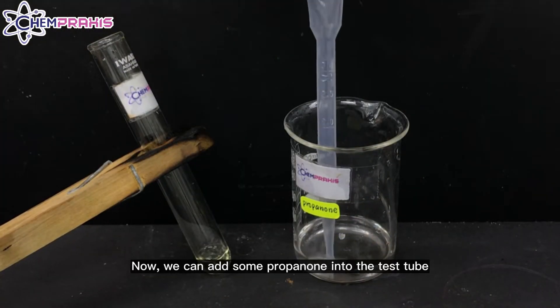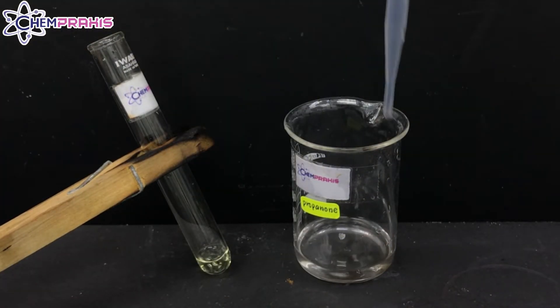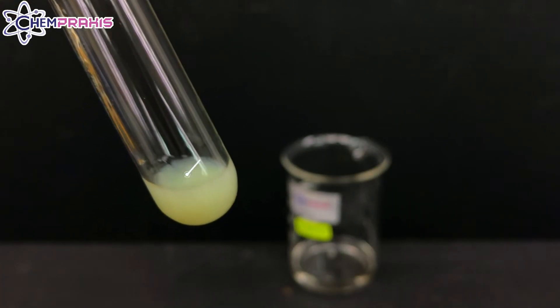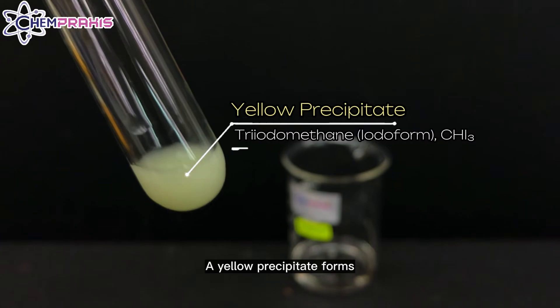Now we can add some propanol into the test tube. A yellow precipitate forms.